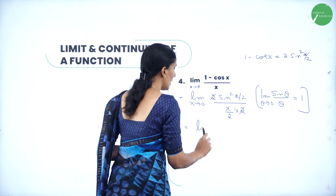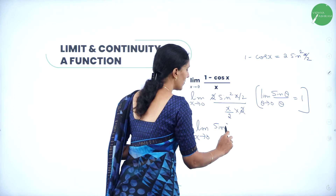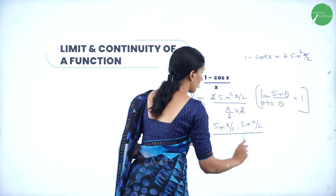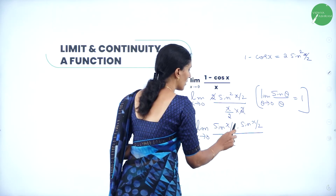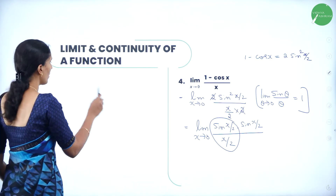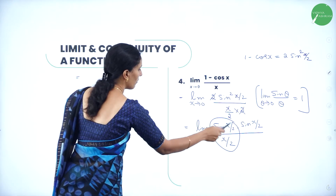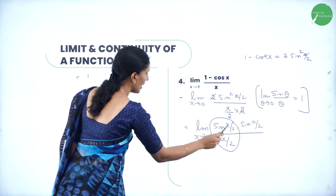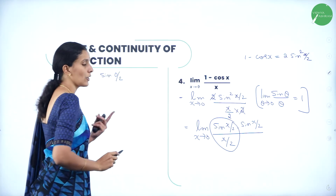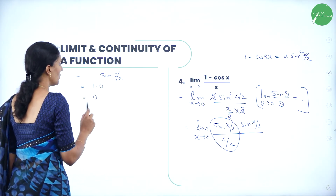I am left with limit as x→0 of sin²(x/2) split as sin(x/2) · sin(x/2), all divided by x/2. The first part is of the form sin θ / θ, so its limit is 1. For the second part, applying the limit gives sin(0/2) = sin 0 = 0. So it is 1 × 0 = 0. The limit value of this function is 0.